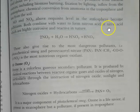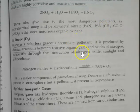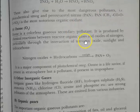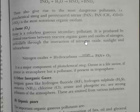Next is ozone, O3. Ozone is a colorless gas and a secondary pollutant, formed through chemical reactions. It is a major component of photochemical smog. Ozone is a life-saver if present in the stratosphere, but is a pollutant at ground level.